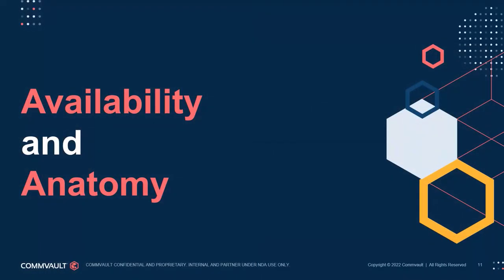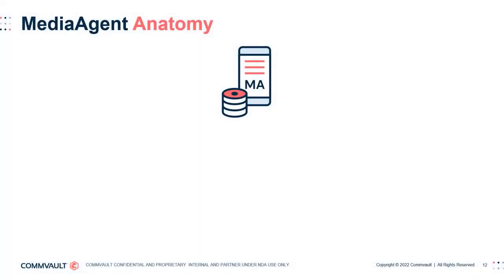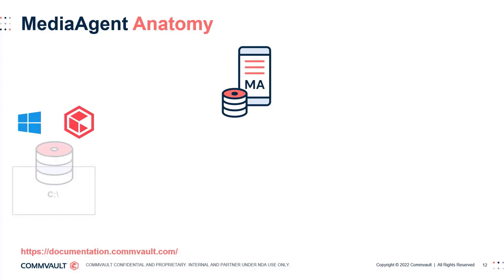Understanding the makeup and functionality of certain media agent-related procedures will help guide you in design. This slide describes best practices for physical disk and logical drive layouts when planning media agent deployments on Windows, which is the most common media agent deployment. The Commvault media agent software is supported on many other operating system varieties — refer to the Commvault documentation website to check supported OS types and versions. The Windows OS and Commvault installation binaries should be installed on the C drive, placed on a RAID disk set configured on FastDisk, with additional disk space for temporary files and log file growth. The media agent binaries may be installed on a separate disk set if desired, but that is not essential.